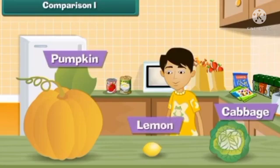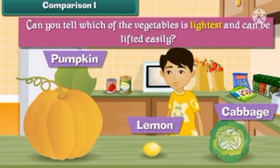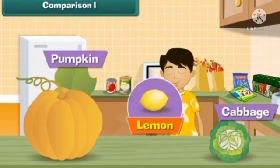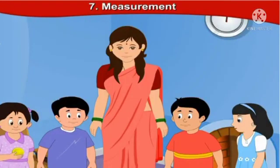Here is pumpkin, cabbage and lemon. Can you tell which of the vegetables is lightest and can be lifted easily? Lemon, lemon is the lightest object among these three and can be lifted easily.